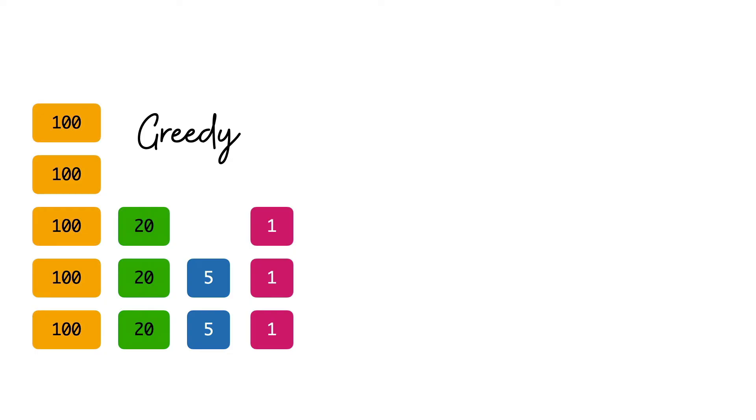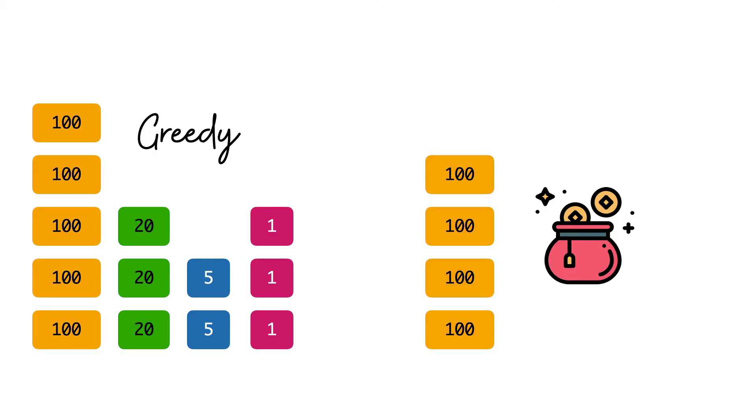So suppose that on some instance your greedy algorithm produces a solution and it looks like this. Now the specific numbers are not important here. Let's just imagine that this is some solution to some instance. Now suppose somebody comes up with a competing optimal solution which uses fewer bills and let's say it's different from the greedy output. Now the point is that we want to get to a contradiction because we have assumed that there is a better optimal solution than what is produced by the greedy algorithm. So in particular, let's take a look at this optimal solution and let's take a look at the first denomination for which the optimal solution has a different behavior from the greedy solution.